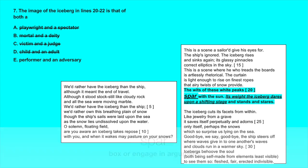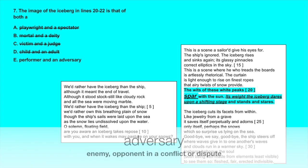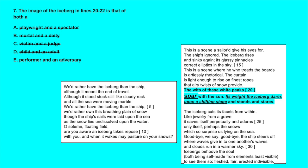So we can say that there's an image here of the iceberg as an adversary since it's sparring with the sun. So E, performer and an adversary, is the best answer out of the choices that we have.